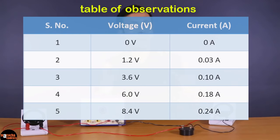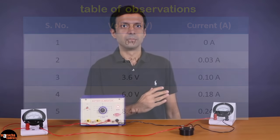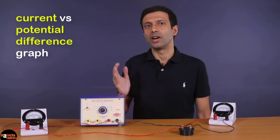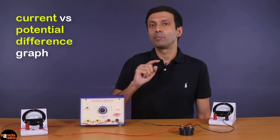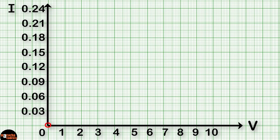What can we conclude from this table? As the potential difference across the wire increases, the current in the wire also increases. Let's plot a graph — a current versus potential difference graph, with potential difference on the x-axis and current on the y-axis. As you can see, the graph is approximately a straight line passing through the origin.